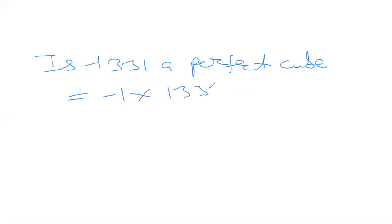Now is minus 1331 a perfect cube? Let us take here minus. So what we will write here? First of all, minus 1 into 1331. We can write it like this. Now 1331, let us factorize it.